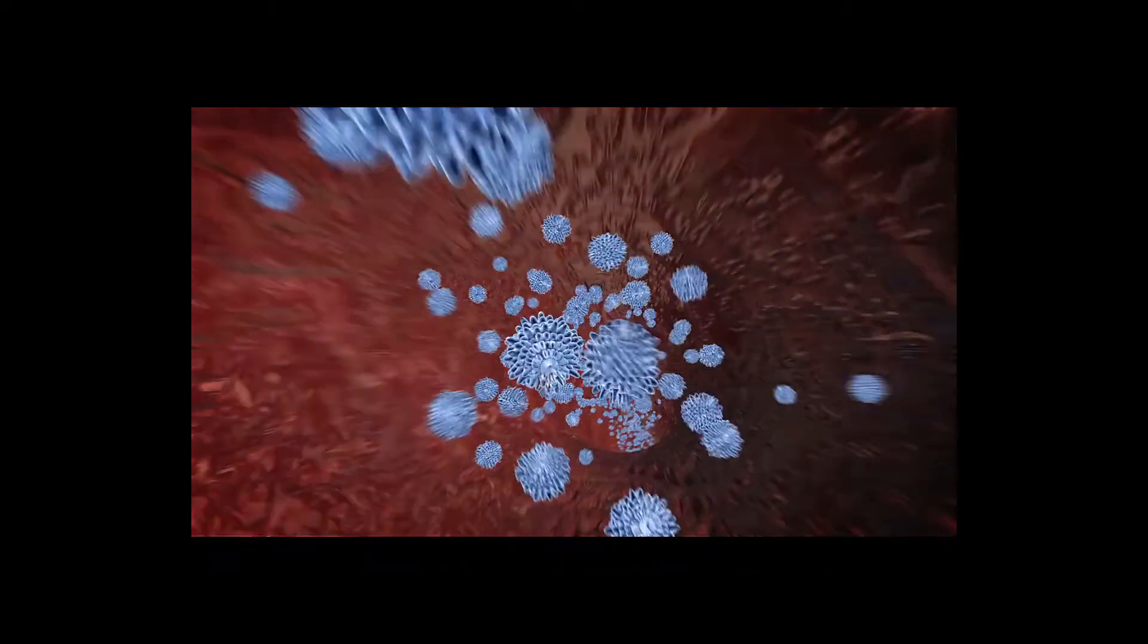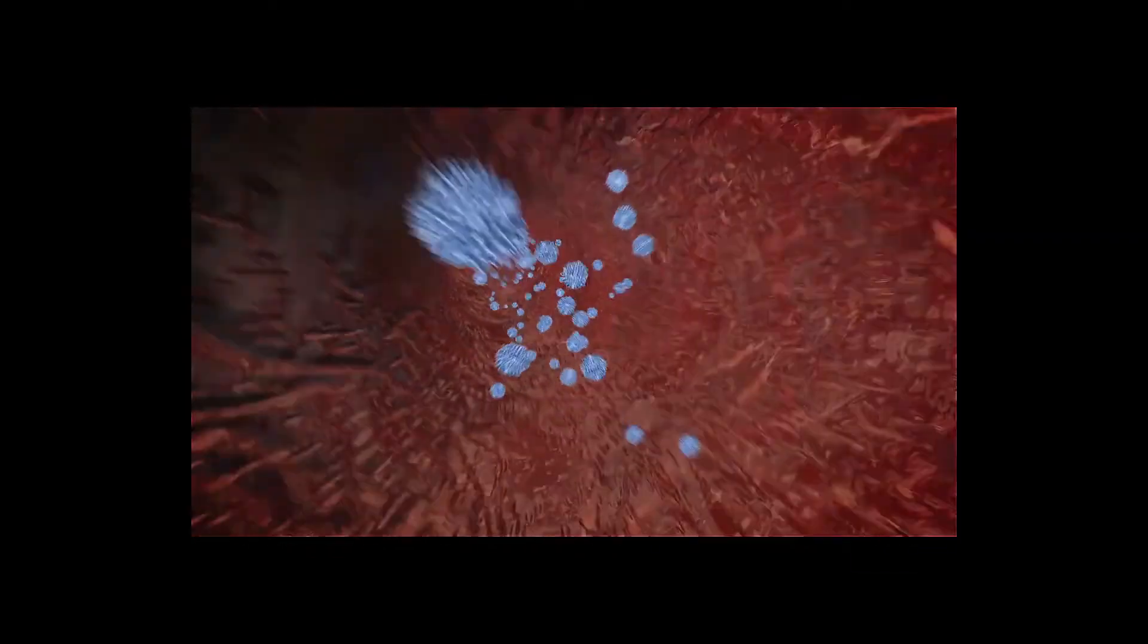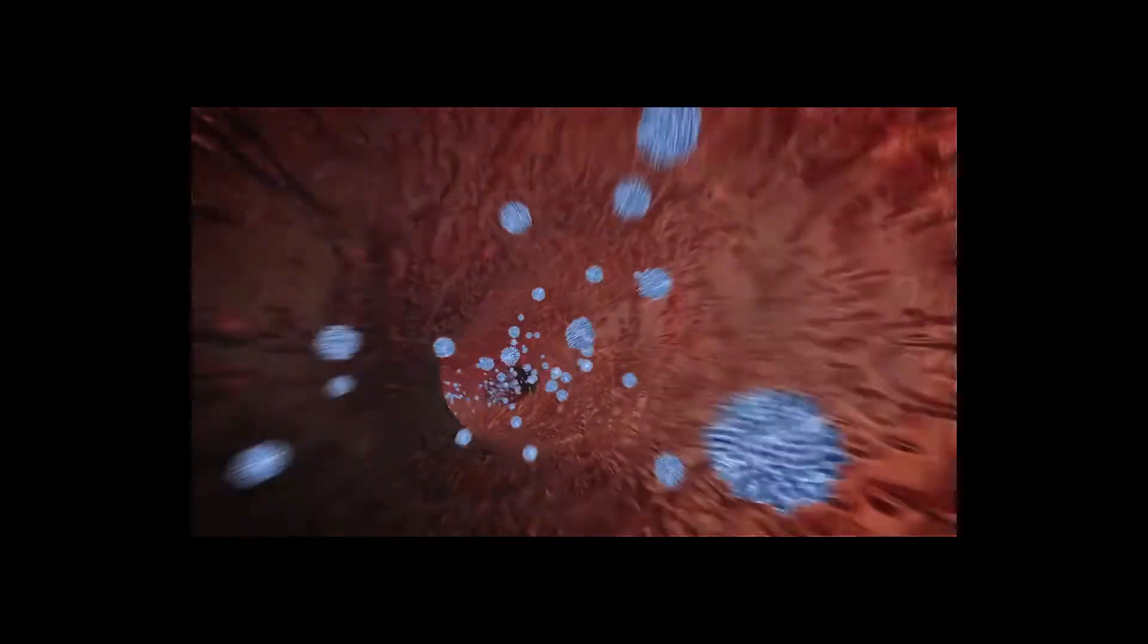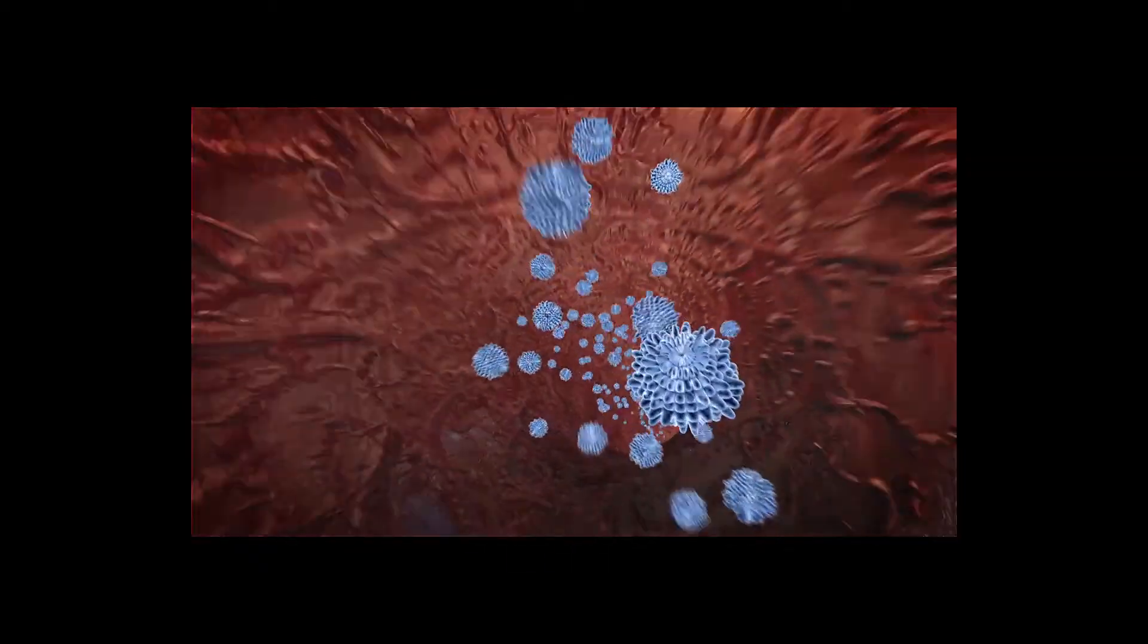To perform the test, a technician takes a blood sample from the patient and sends it to the laboratory for analysis. The principle behind hemoglobin electrophoresis is that each type of hemoglobin has a different electrical charge and can be distinguished accordingly.